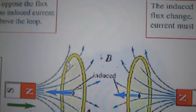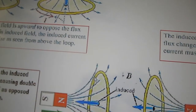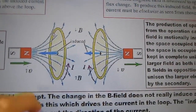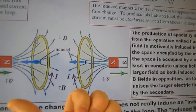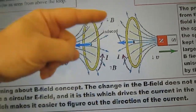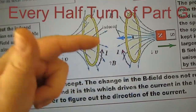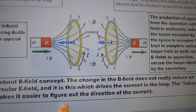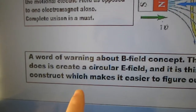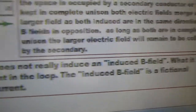The E-fields are not opposing — the E-field is curling around the secondary coil. When this goes one direction and the other goes the opposite direction, the E-field curls toward us. A word of warning about the B-field concept: the change in B-field does not really induce an induced field — what it really does is create a circular field that drives the current in the loop. The induced B-field is a fictional construct which makes it easier to figure out the direction of the current.